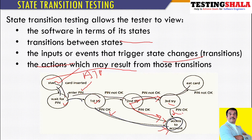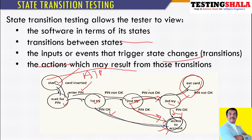Even if the second attempt also fails, it will allow a third try. Even in the third attempt, if the correct PIN is entered, then access will be provided. But if the person is not successful even on the third try, then the ATM should take the card and not allow that person to retrieve it from the ATM.